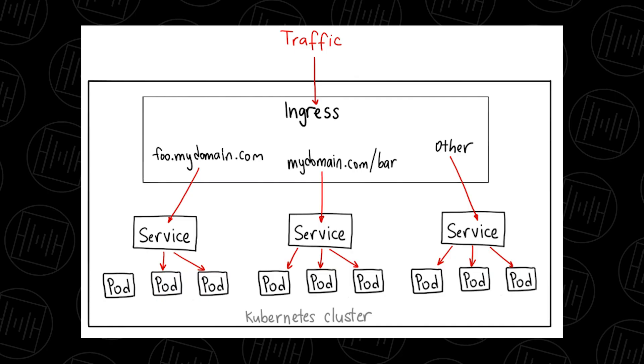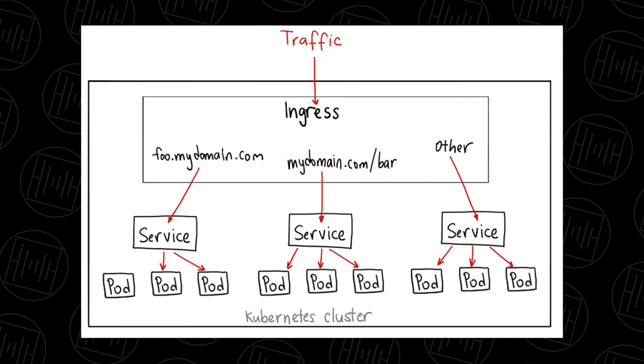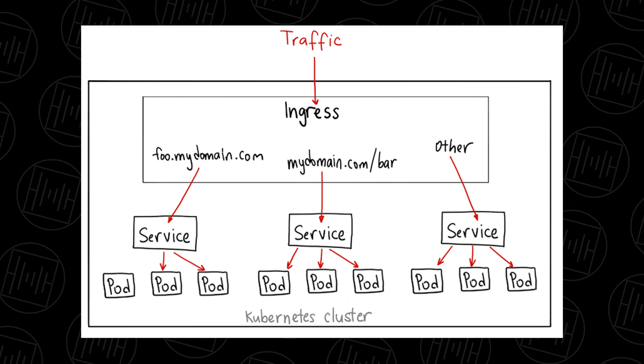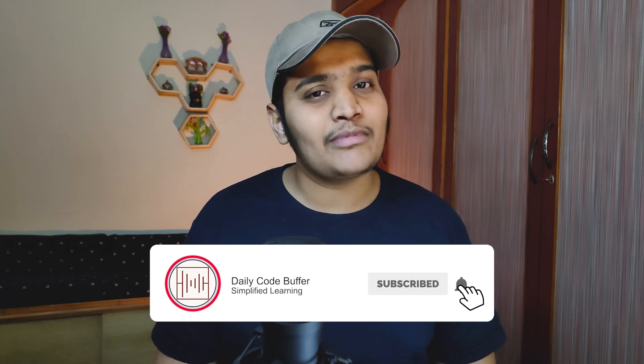In ideal scenarios, an ingress component is used and all internal services within the Kubernetes cluster are called through it. Another common approach is to use a Load Balancer service for your API gateway, through which all internal services are called. Either approach is feasible depending on your use case. These are the different service types in Kubernetes and how they differ from each other. If you have questions, leave them in the comments. If you liked this video, give it a thumbs up and subscribe. Happy coding, bye bye.